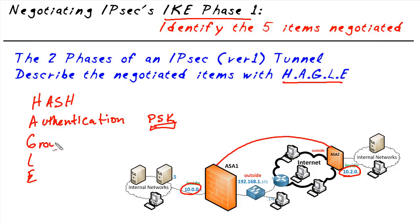The G is for group, which represents the Diffie-Hellman group. Diffie-Hellman was named after the two gentlemen who wrote the protocol, and what it allows ASA1 and ASA2 to do is generate secret keys that they can use with each other to encrypt and decrypt data respectively.